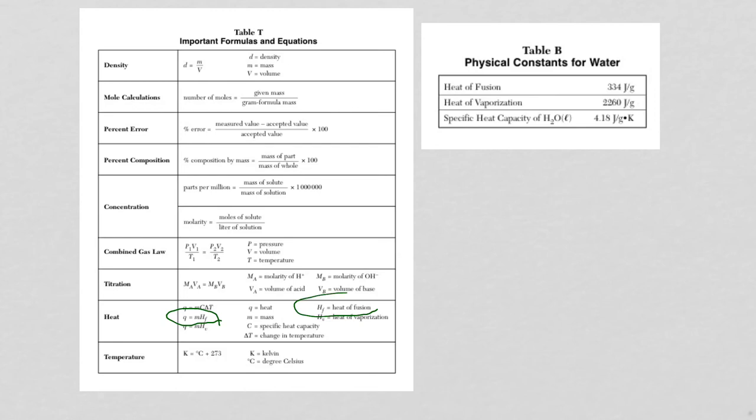The equation that we're using now is going to be Q is equal to M H F. Now I don't need to confuse you, but heat of fusion, fusion right now in this unit means melting. So I also need the heat of fusion for water, 334 joules per gram.